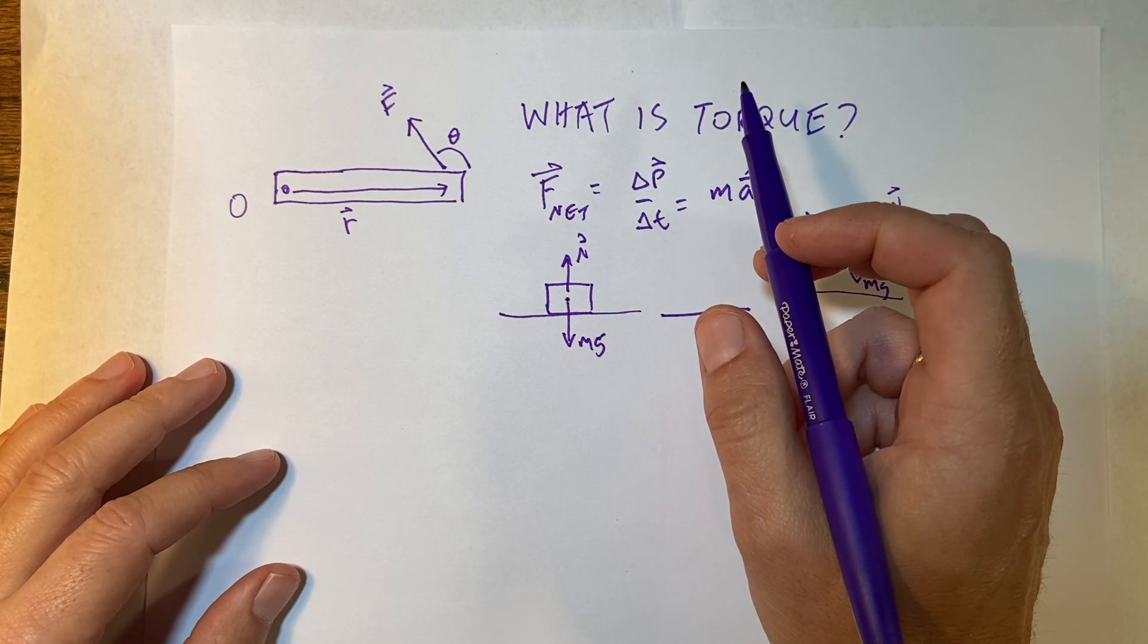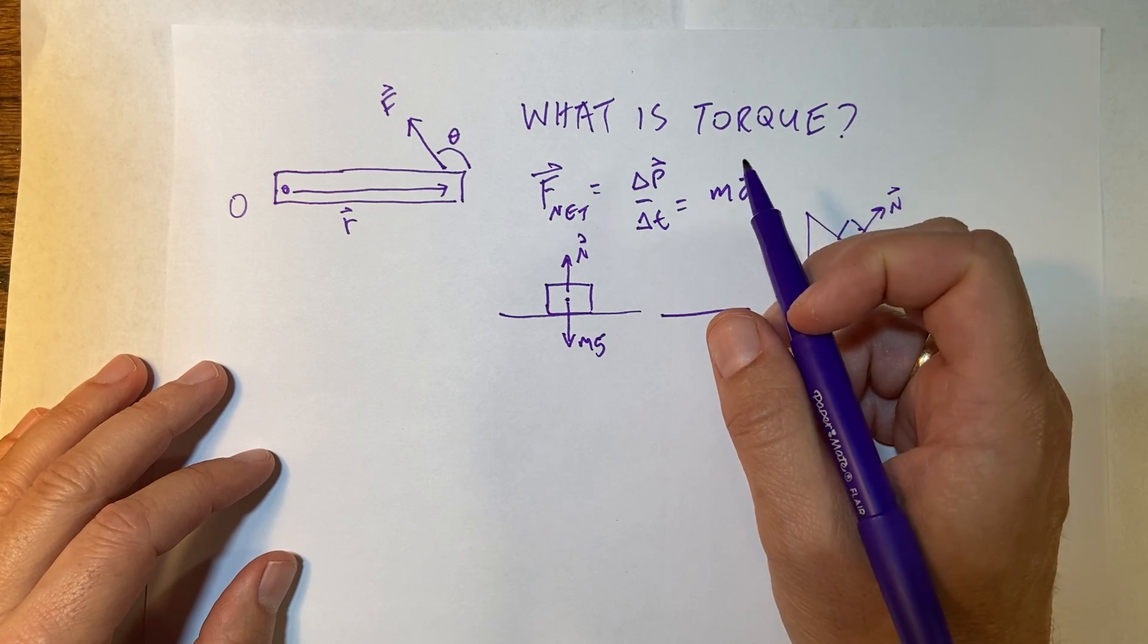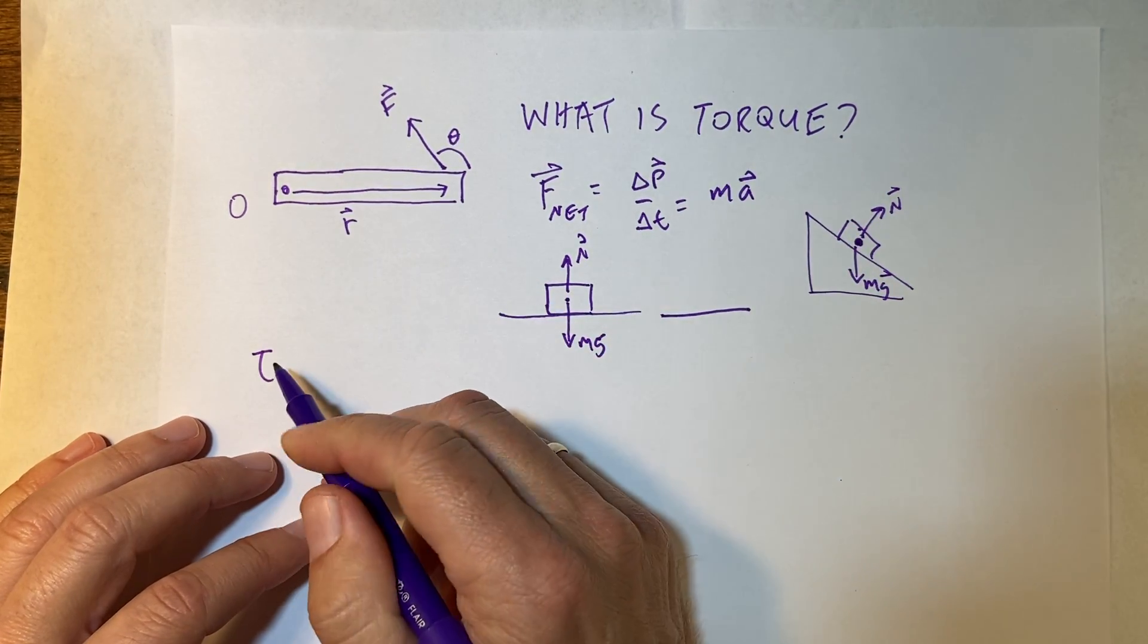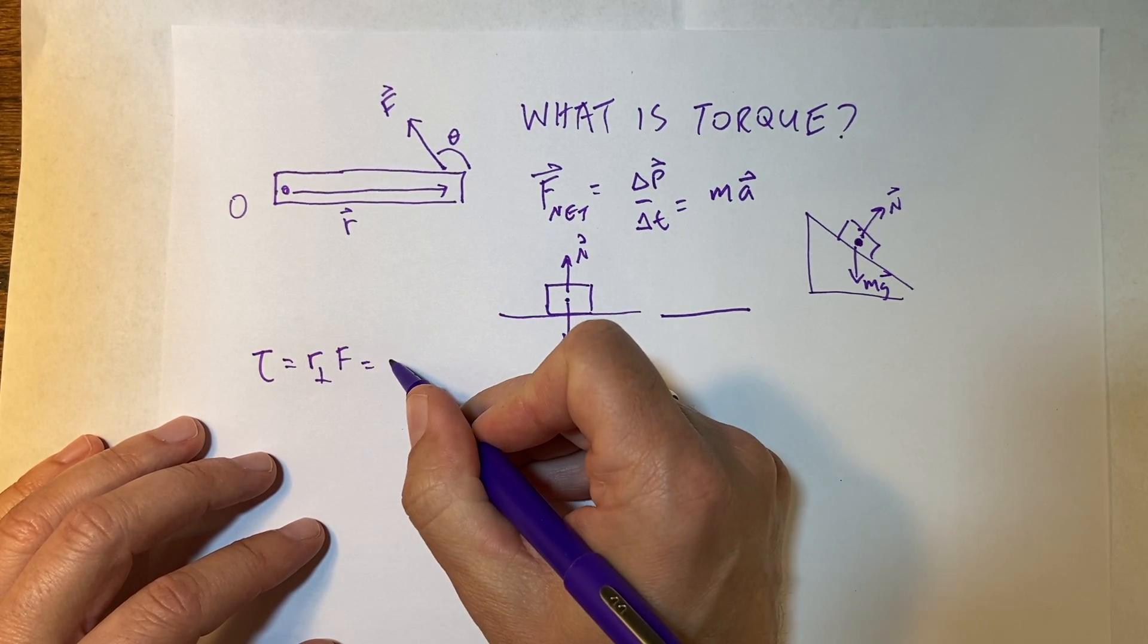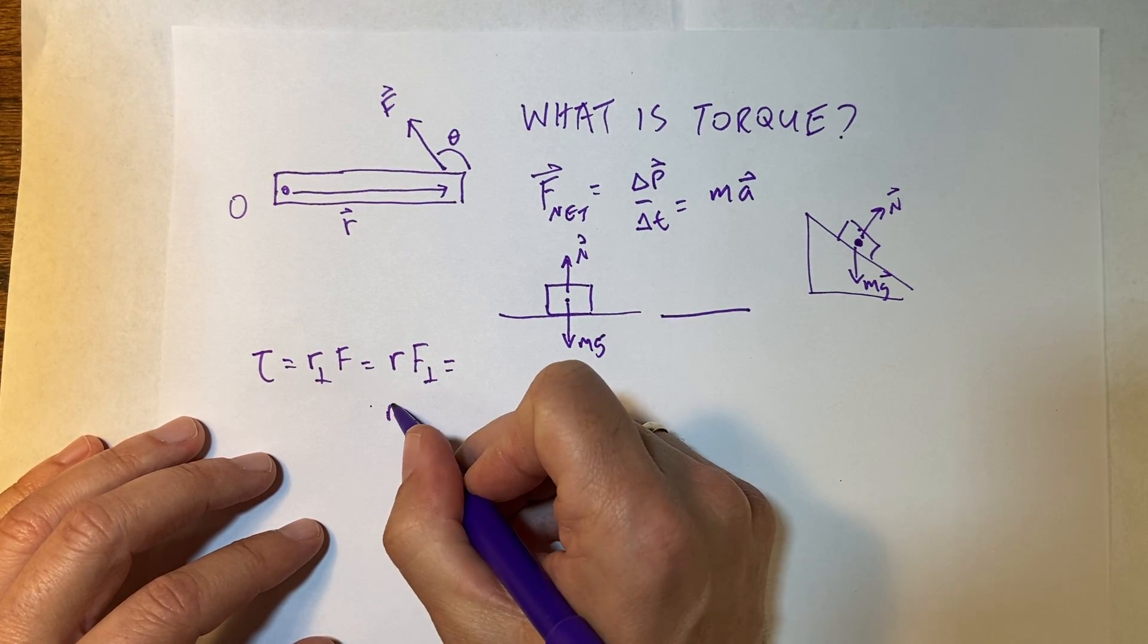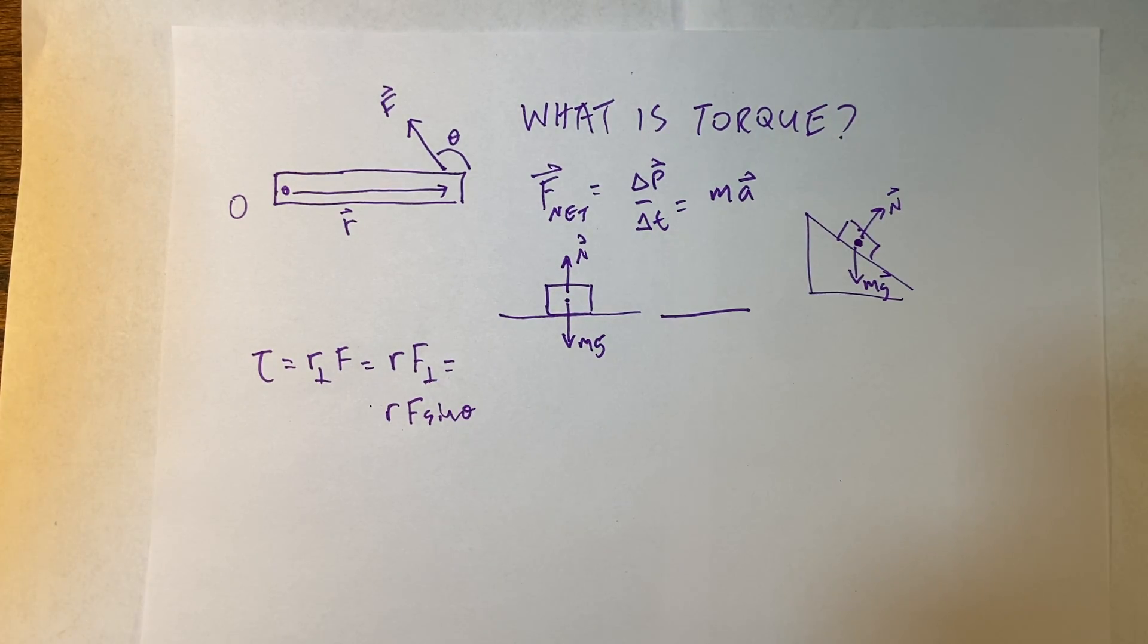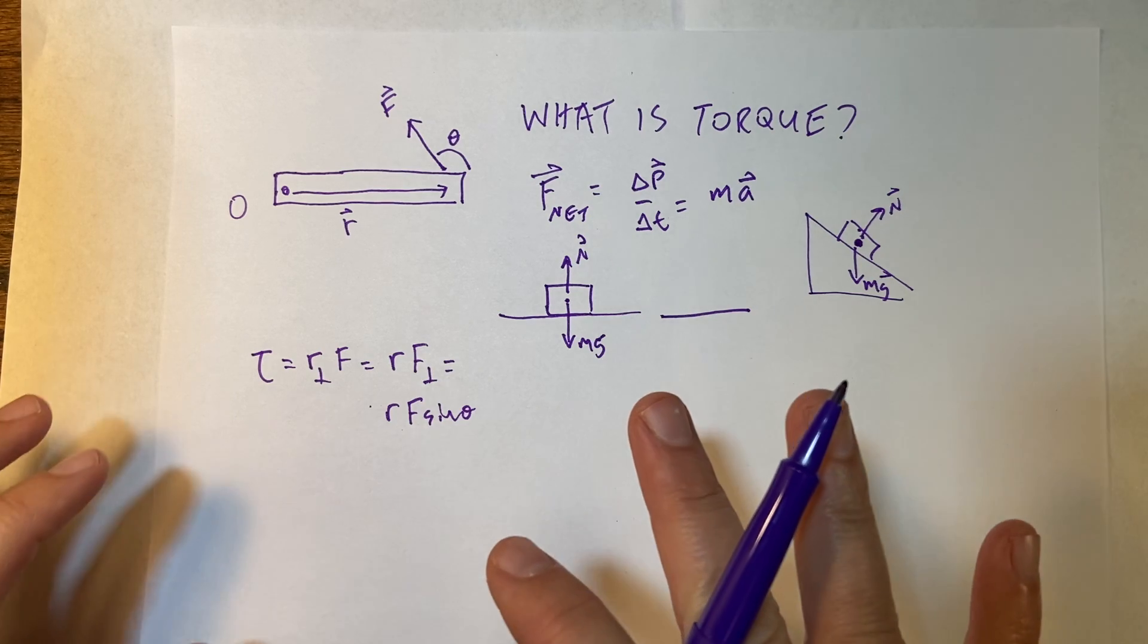Okay, now, you may have had torque in your normal, traditional physics textbook. And they may have said something like this. Torque, we use the Greek letter tau, is equal to R perpendicular F, which is equal to R F perpendicular, which is equal to R times F times sine of theta. That's fine. Okay, that's fine. And that's not wrong. It's just not the whole story.